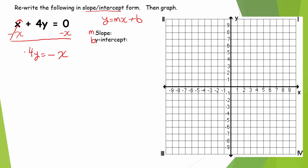Now, 4 is being multiplied by y. How do I undo multiplication? With division. So to get y by itself, I'll divide both sides by 4, and I'll have y equals negative x over 4.